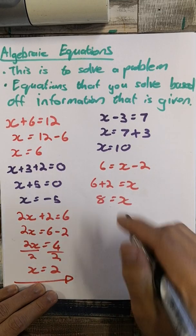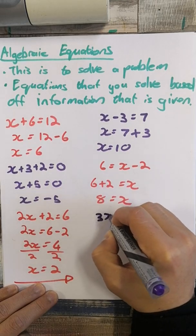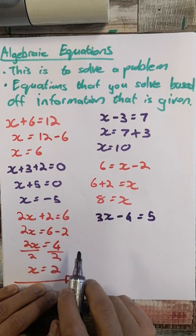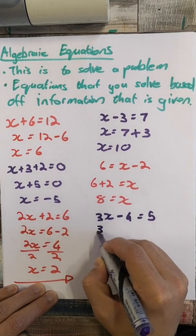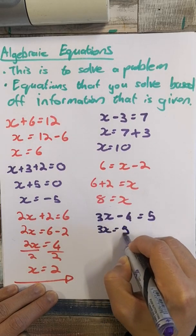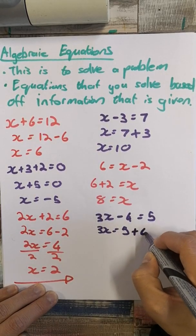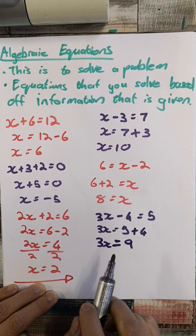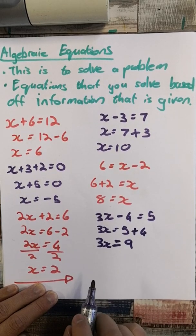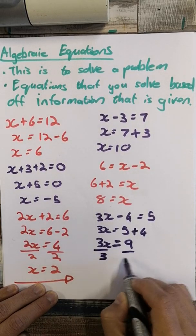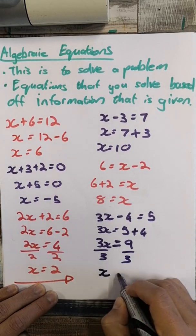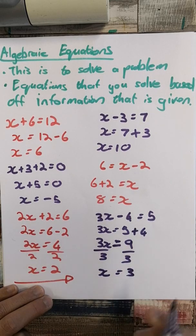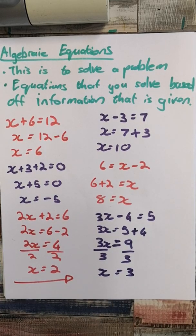Same thing: 3x minus 4 equals 5. Left with subtraction only, no like terms. I take the 4 over — it changes to a positive — so 5 plus 4 gives 3x equals 9. That's not my final answer — I need to divide by my coefficient, which is 3. Therefore x equals 3, because 9 divided by 3 is 3.